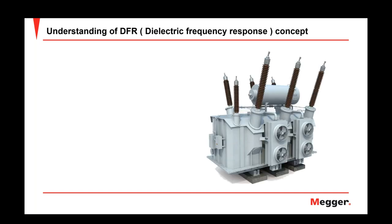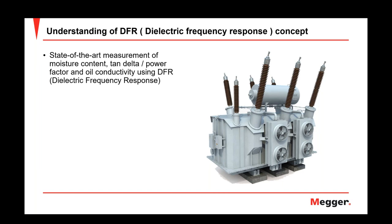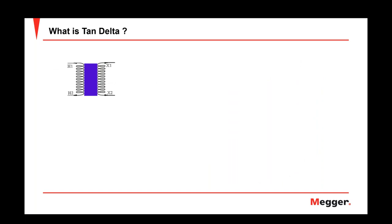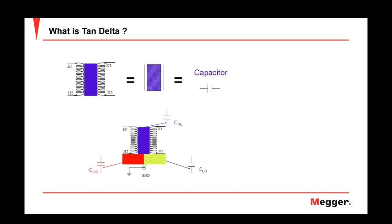Starting with transformers — one of the state-of-the-art measurements of moisture content is making tan delta as a power factor or oil conductivity assessment using DFR, or Dielectric Frequency Response. So what is tan delta? If we assume we have two windings with insulation in between — as is typical in a transformer — and we look at that insulation as an electrical element, it behaves like a capacitor.